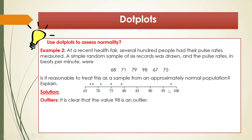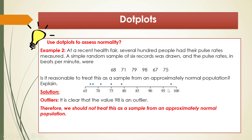We have detected a sign of non-normality. Therefore, we should not treat this as a sample from an approximately normal population. That's how we use a dot plot to assess normality.